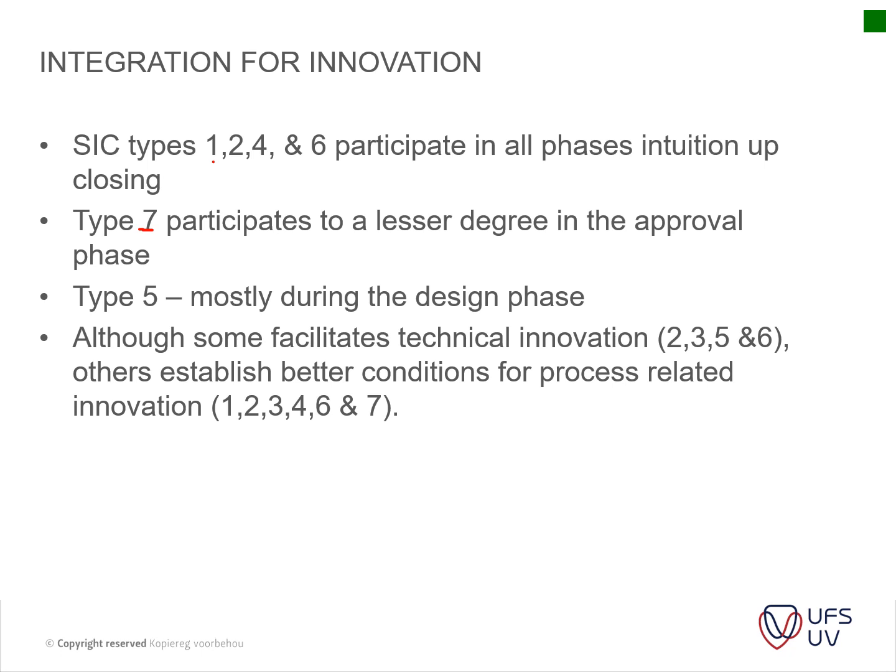The chapter closes by noting that some champion types facilitate technical innovation — types 2, 3, 5, and 6 — while others establish better conditions for process-related innovation. Please have a look at this on pages 57 and 58 where this is stated, and also pages 53, 54, 55, 56, and 57 for the full details of what all of these champions include.